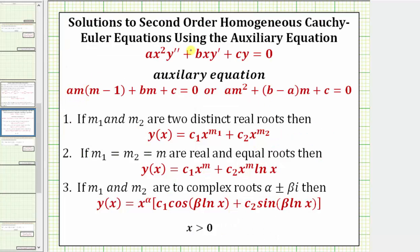In order to solve a second-order Cauchy-Euler differential equation, we use what's called an auxiliary equation, which is similar to the characteristic equation for a second-order linear homogeneous differential equation with constant coefficients. But the auxiliary equation is different than the characteristic equation. The auxiliary equation is often given in one of these two equivalent forms. The solutions to this equation give us the information we need to find the general solution to the given Cauchy-Euler differential equation.